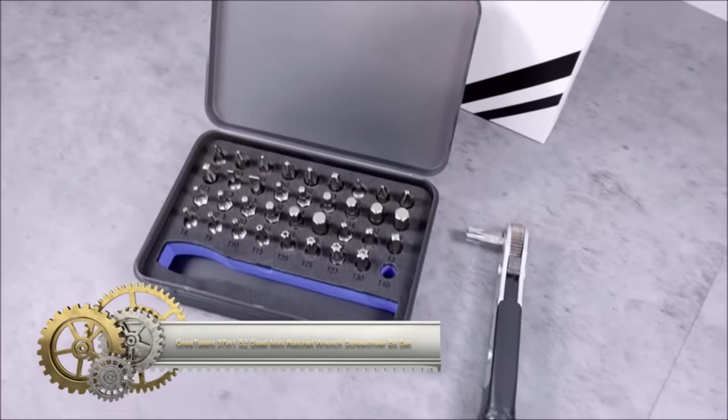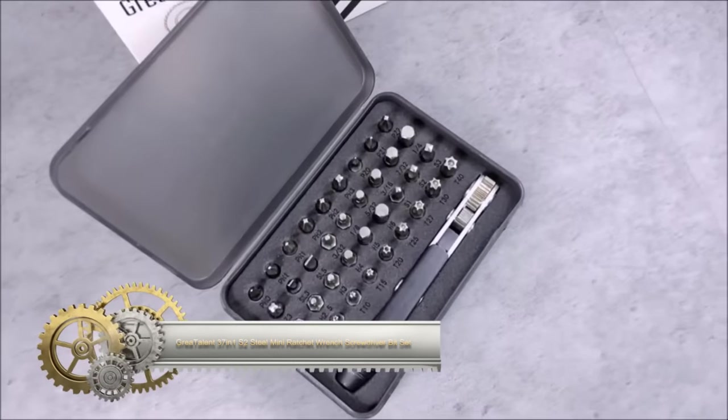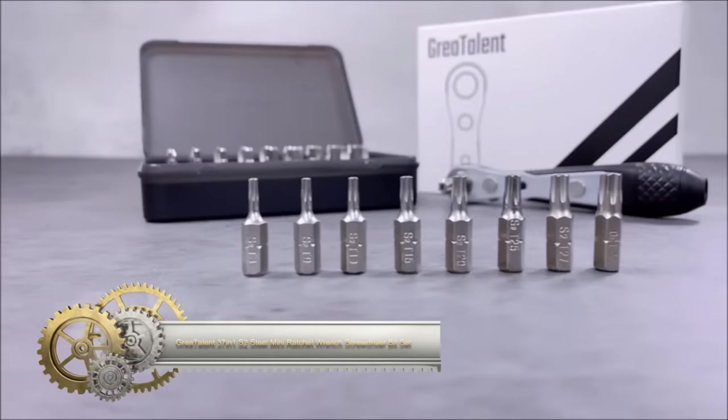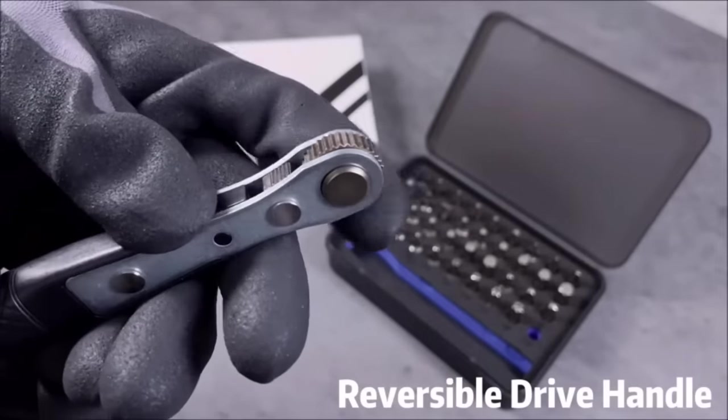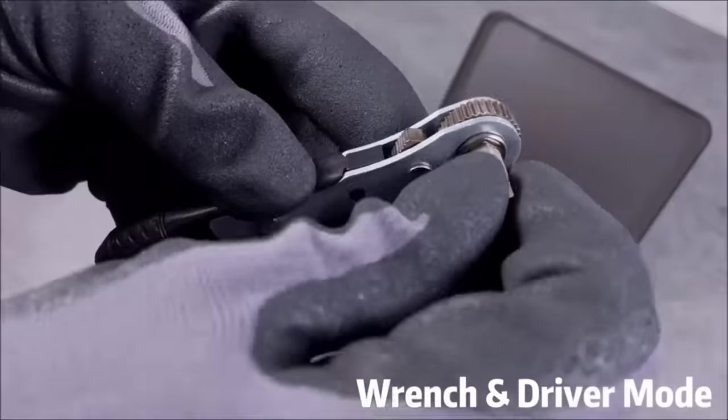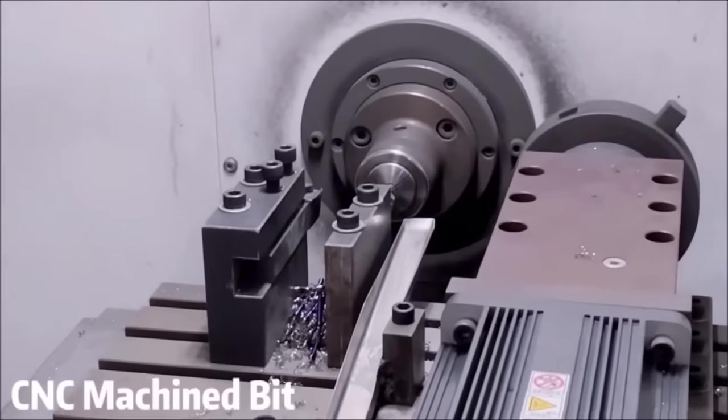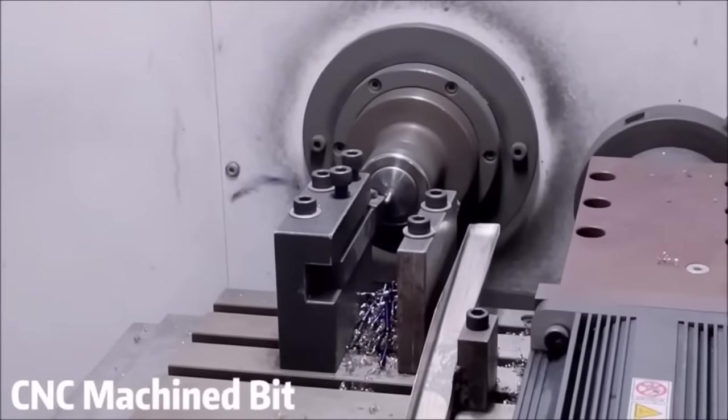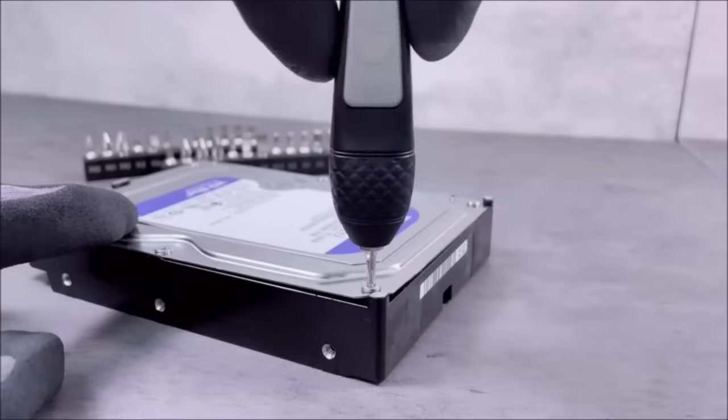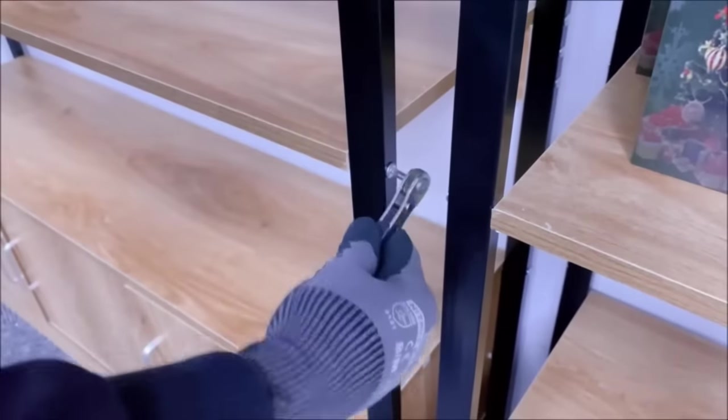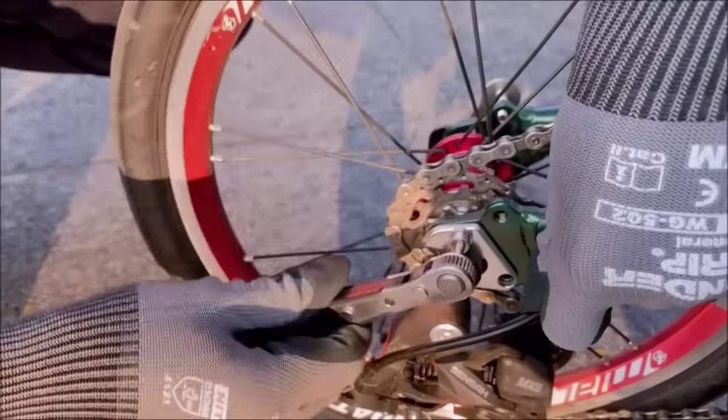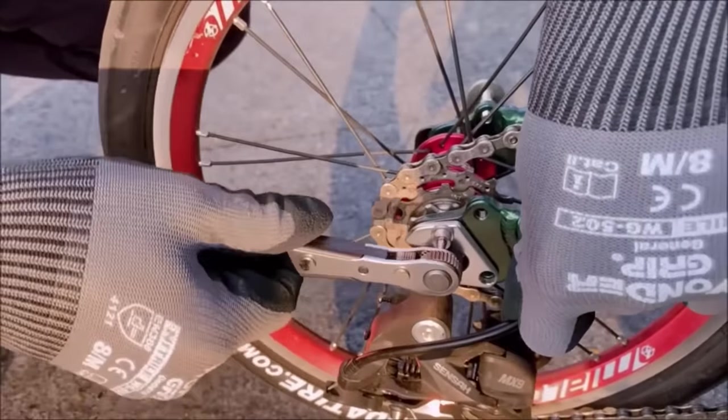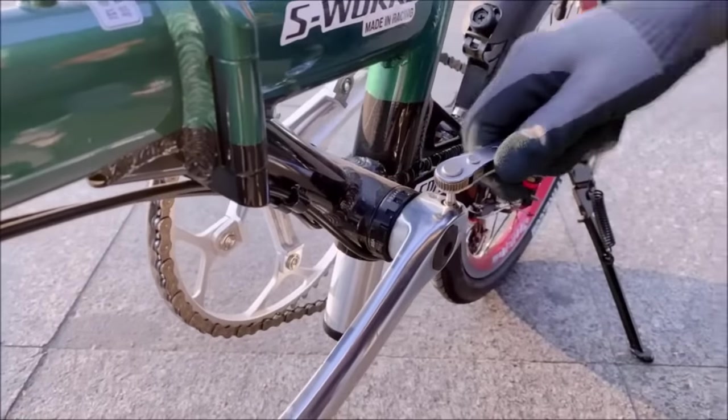The Great Talent 37-in-1 S2 Steel Mini Ratchet Wrench Screwdriver bit set is a versatile and durable tool kit designed for a range of tasks, including driving and removing screws and bolts of various types and sizes, assembling and disassembling furniture, working on electronics and appliances, and performing general household repairs. This comprehensive set features bits in multiple sizes and styles, including Phillips, Posidrive, Hexagon, Torx, Slotted, and Square.